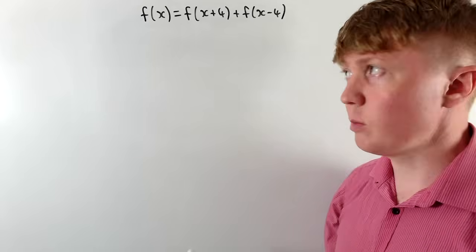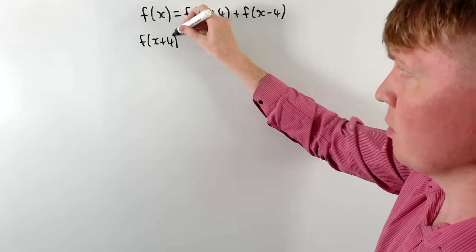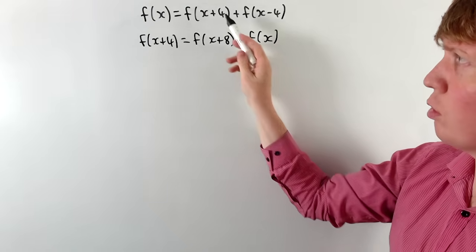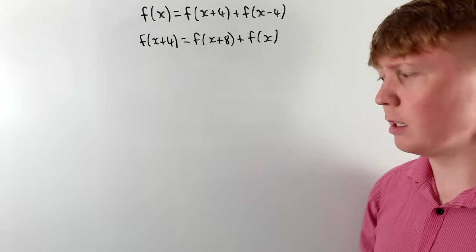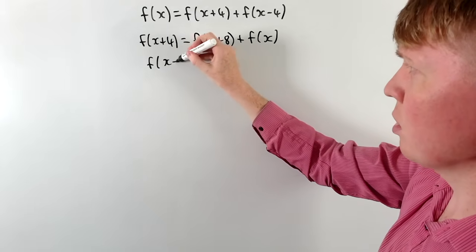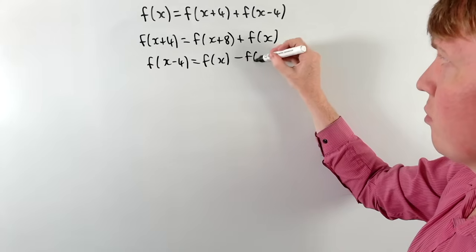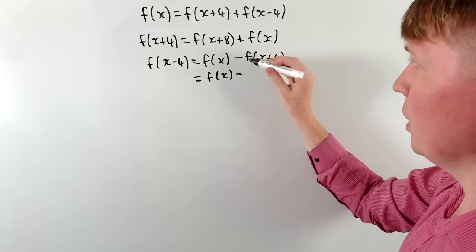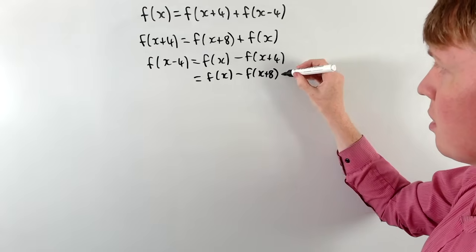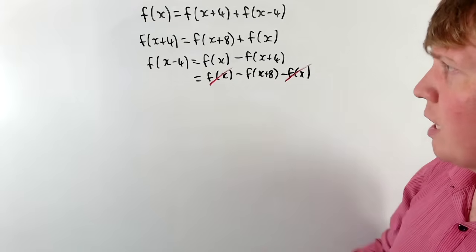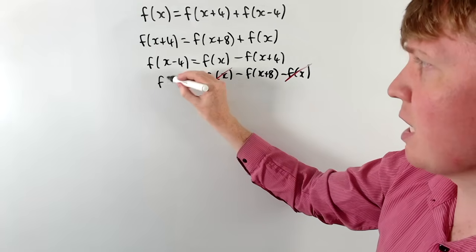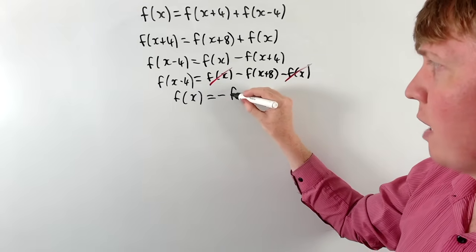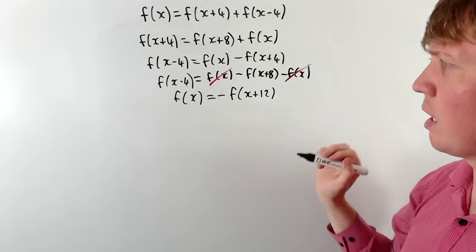From here, we replace x by x+4: on the left hand side f(x+4), and on the right hand side f(x+8)+f(x). From the top equation, f(x-4) = f(x)-f(x+4), and f(x+4) = f(x+8)+f(x), so substituting we get f(x)-f(x+8) minus f(x). The f(x) terms cancel, leaving f(x-4) = -f(x+8). Replacing x by x+4 gives f(x) = -f(x+12). We're just adding 4 to both x values.